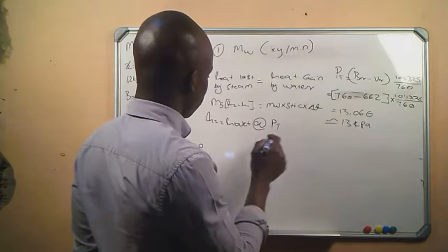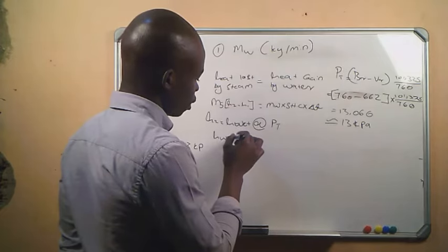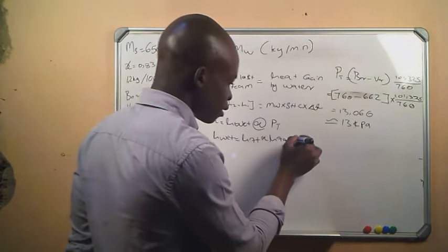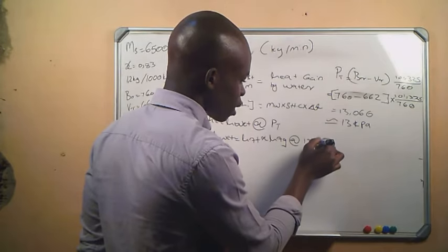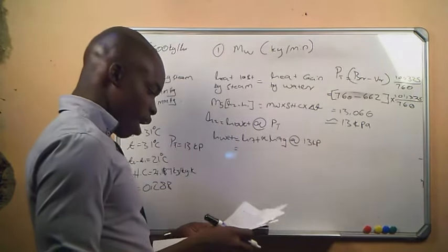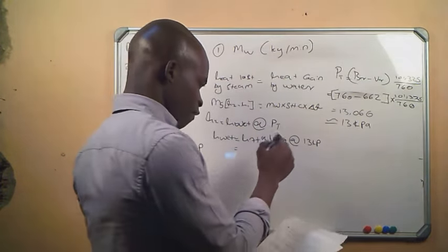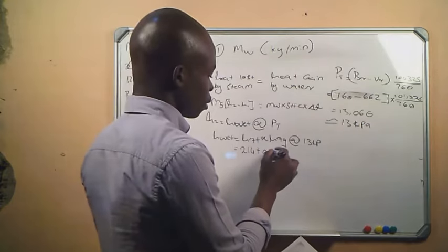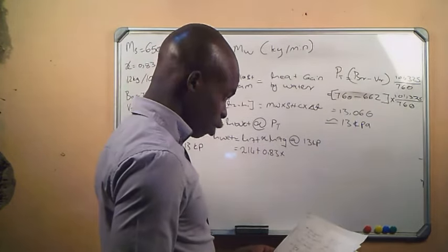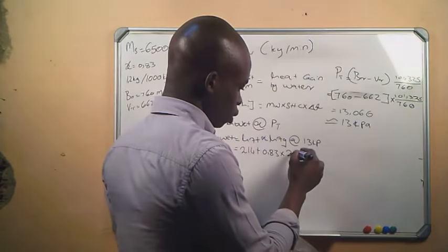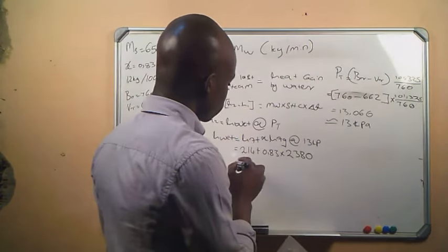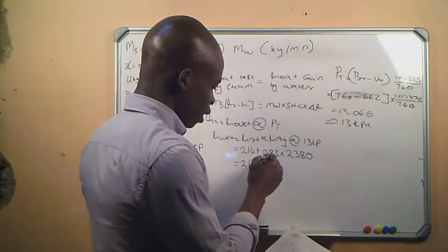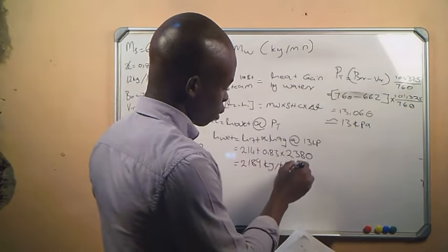Now we can get the value of h_wet. h_wet equals hf plus drainage fraction f times hfg, all at 13 kPa. From the steam table, hf is 214 and hfg at 13 kPa is 2380. So h2 equals 214 plus 0.83 times 2380, giving an answer of 2189 kJ/kg.